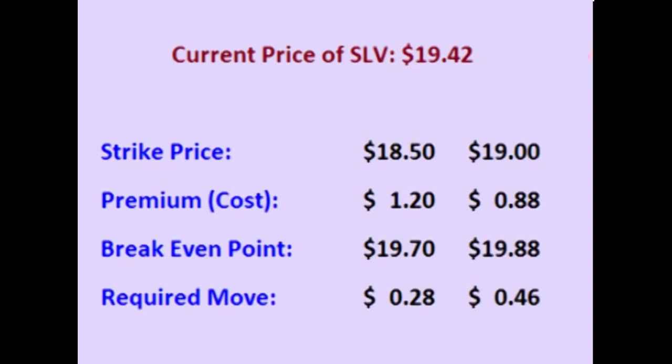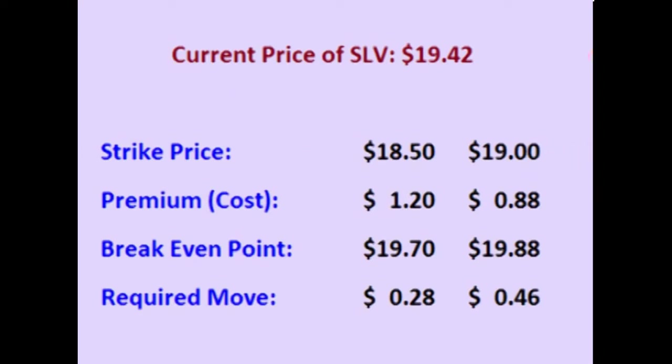Comparing the two choices: the $18.50 strike costs more up front than the $19.00 strike, but it also locks in a preset buy price $0.50 a share lower. The $19.00 strike costs less, but SLV has to move farther for the $19.00 strike to be profitable than it does for the $18.50 strike.